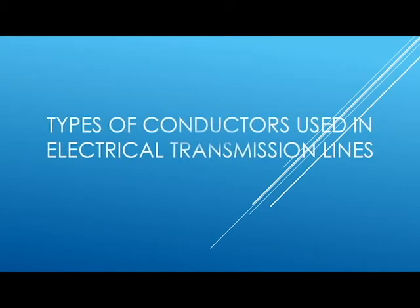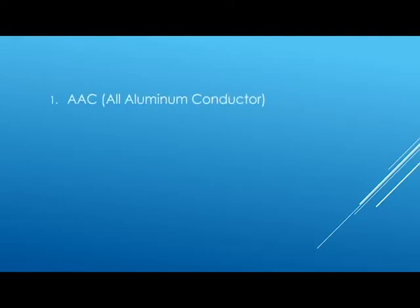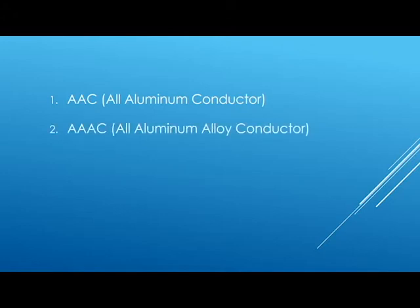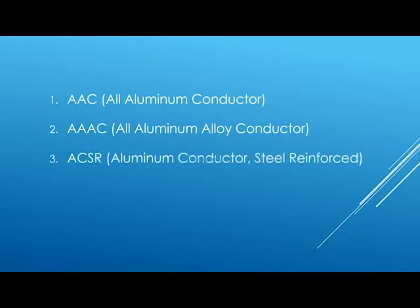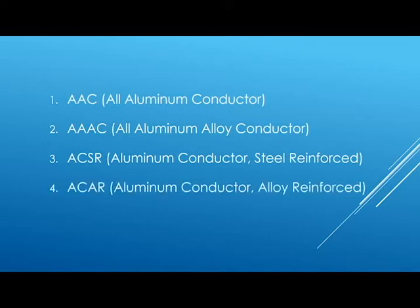Today we will discuss the types of conductors used in electrical transmission lines. There are different types, but we will discuss the most common ones: number one, AAC, that is All Aluminum Conductor; number two, AAAC, that is All Aluminum Alloy Conductor; number three, ACSR, Aluminum Conductor Steel Reinforced; and number four, ACAR, that is Aluminum Conductor Alloy Reinforced.